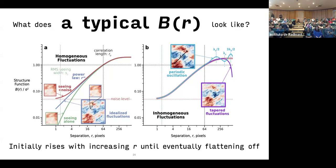A typical structure function rises initially with radius, eventually flattening out. This can be affected by various things: by seeing, which tends to steepen the structure function; noise, which tends to flatten it. If you have inhomogeneous fluctuations, you can produce variations.